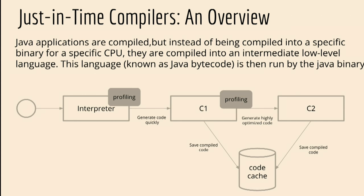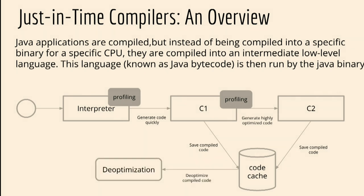After C1, there is C2, which does a bit more optimization but is slower. C2 also has a cache and can put some data there. But is that good enough? We're not exactly sure what C2 really does — it could remove code that is used. So there is a phase called de-optimization, which basically restarts the cycle. That is one of the reasons why we need to warm up our application — in order to prepare the JVM and allow all those optimizations to be completed and available for us.